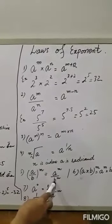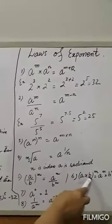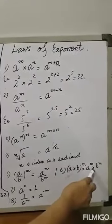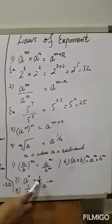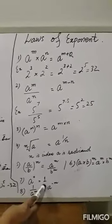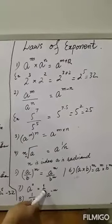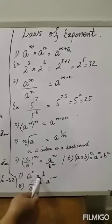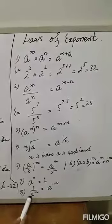The sixth law is: (A times B) whole raised to power M equals A raised to power M times B raised to power M — here the bases are different. The seventh law is: A raised to the power 0 equals 1. Any base raised to power 0 is always equal to 1. For example, X to the power 0 equals 1, 2 to the power 0 equals 1, 85 to the power 0 equals 1.